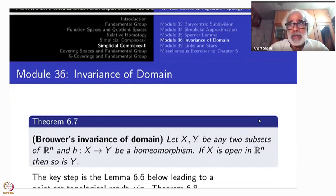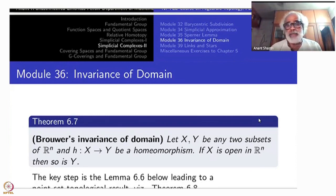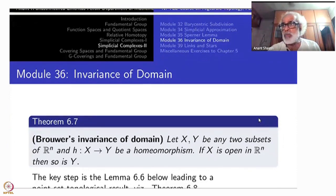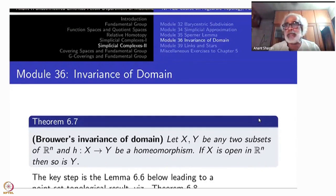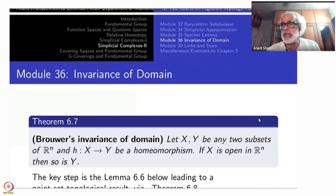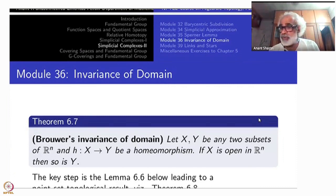Let us now prove the big theorem. The key step is a strengthening of our homotopy simplicial approximation, namely controlled homotopy. That will give you a topological criterion for a point to be an interior point of a subset of R^n — a topological criterion means it will be an invariant of the homeomorphism type of X.